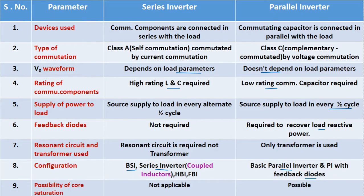Ninth one is possibility of core saturation. In the series inverter, core saturation is not applicable as a transformer is not used. Whereas in the parallel inverter, since a transformer is used, there is a possibility of core saturation.